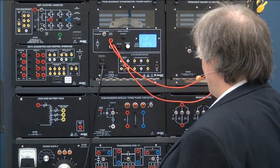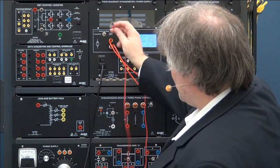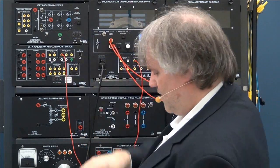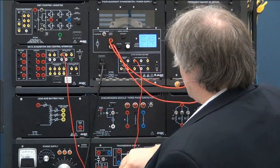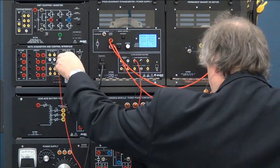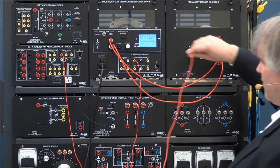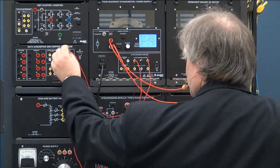So the shaft encoder output A will go into the encoder input A. The digital ground needs to be connected to the digital ground. And the shaft encoder B needs to be connected to B.